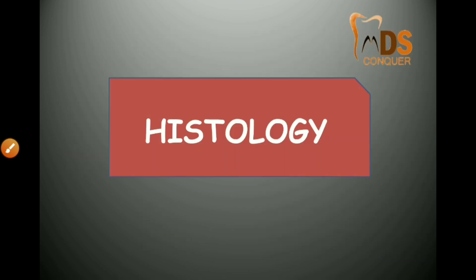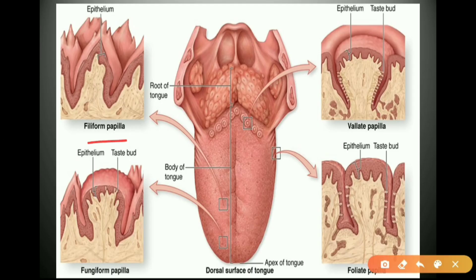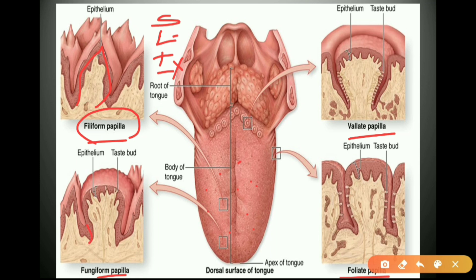There are four types of papillae of the tongue: filiform, fungiform, vallate, and foliate. For each papilla, describe its shape, location, and whether taste buds are present or absent. Filiform papillae are conical in shape, scattered over the entire tongue, and taste buds are absent. Fungiform papillae are dome-shaped or mushroom-shaped, taste buds are present, and they are mostly found at the apex of the tongue.